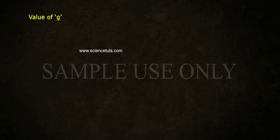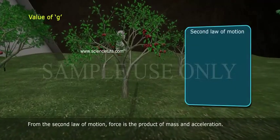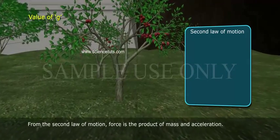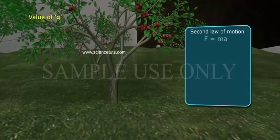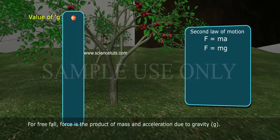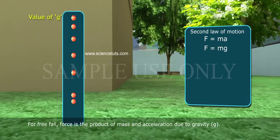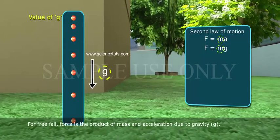Value of g. From the second law of motion, force is the product of mass and acceleration. F equals ma. For free fall, force is the product of mass and acceleration due to gravity g.